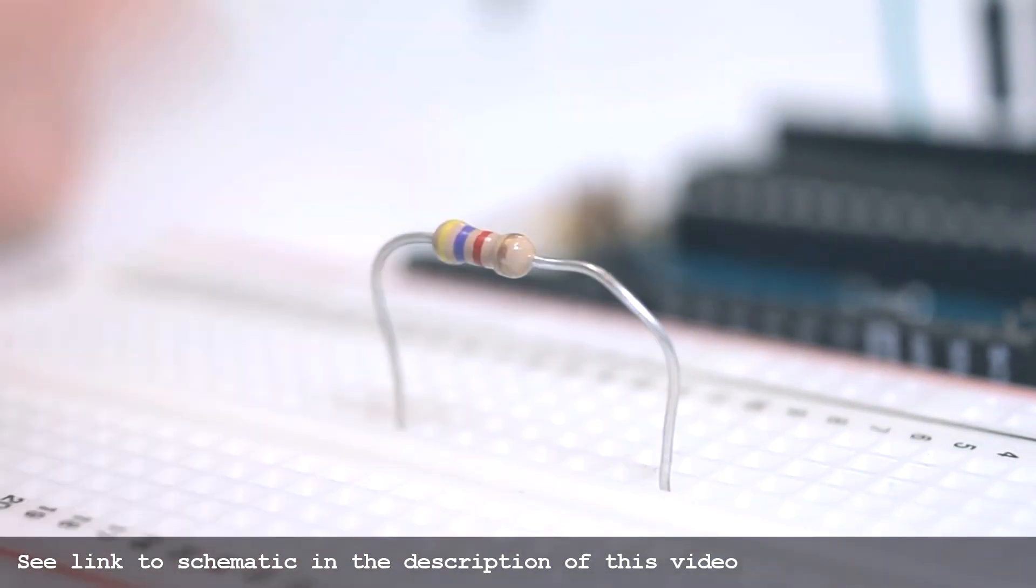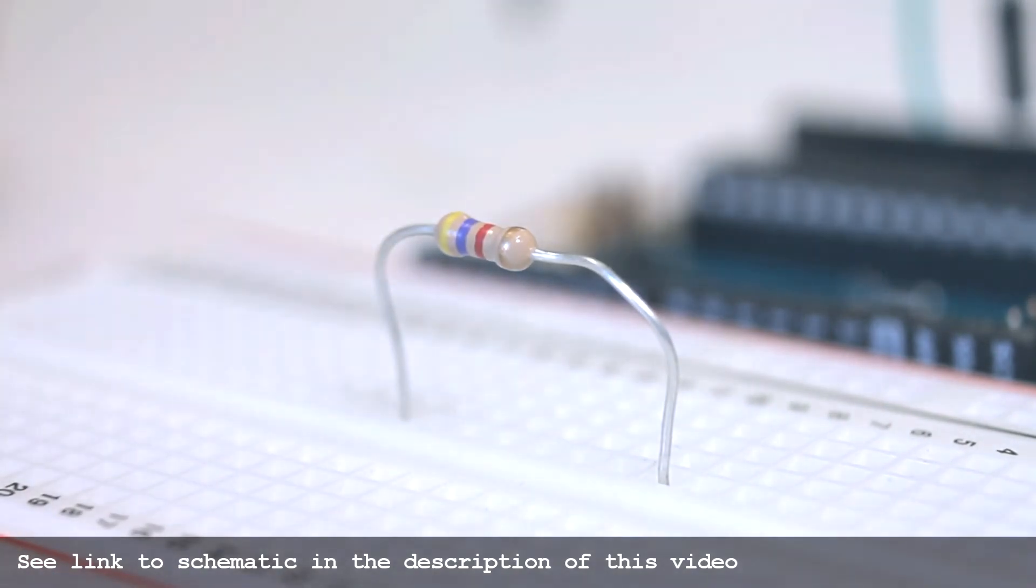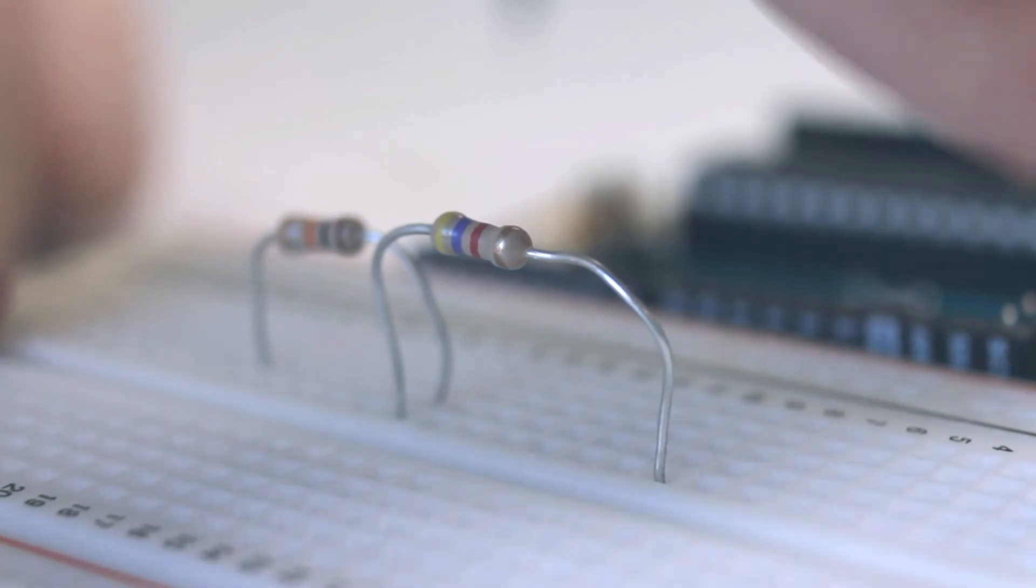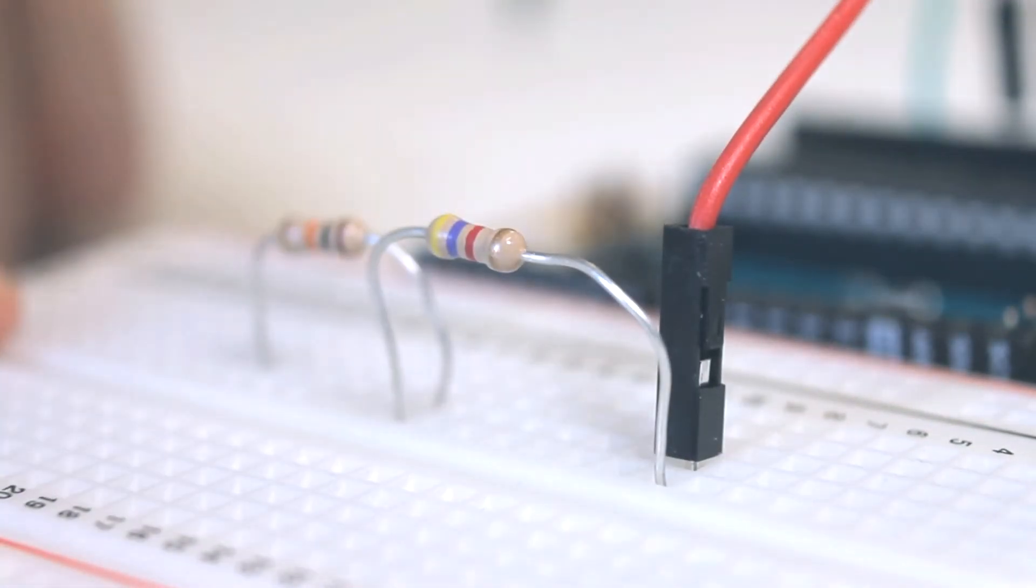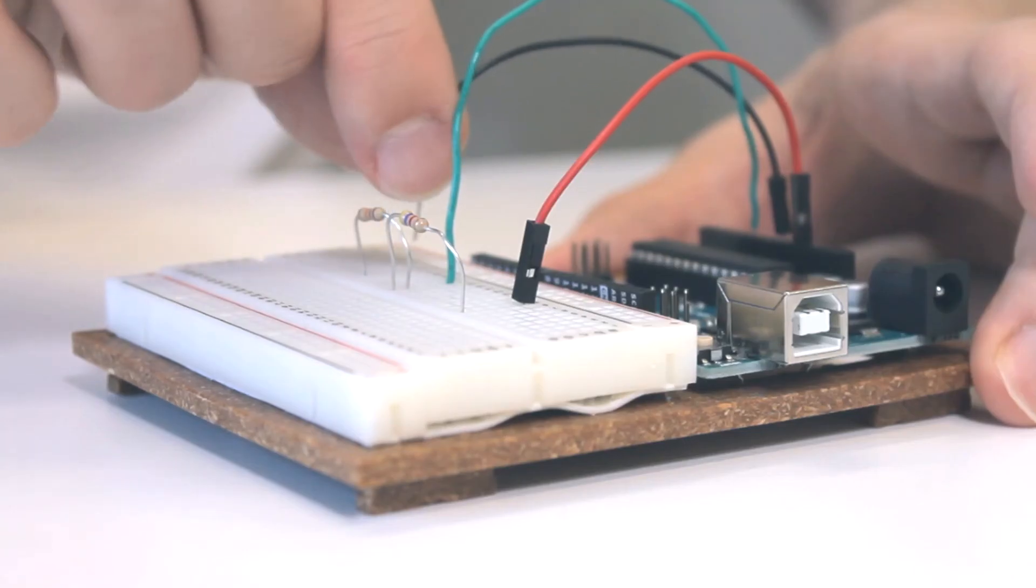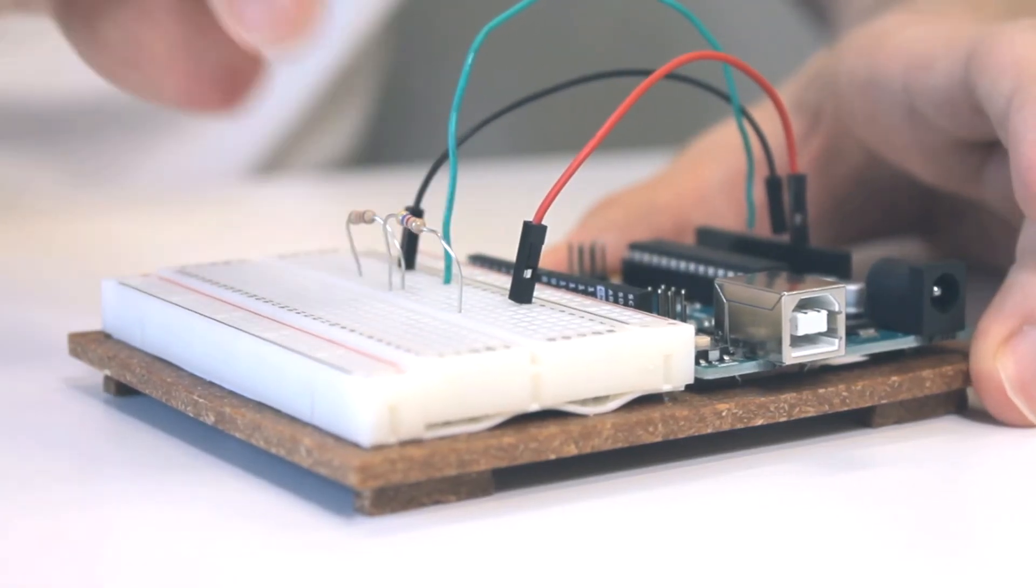First, we connect the resistors in series on the breadboard. Then we connect the 5 volt to the 4,700 ohms resistor and the A0 pin in between the resistors, and lastly ground to the 10,000 ohm resistor.